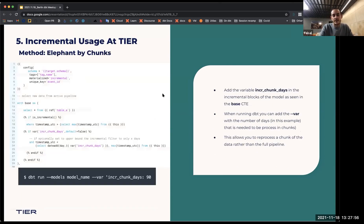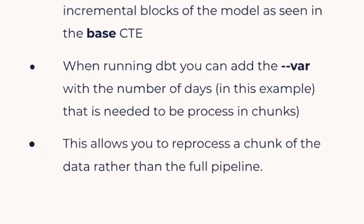The last method is what I call 'the elephant by the chunks.' Instead of reprocessing all the data, you process only a set amount of data. The incremental logic introduces a statement in the where clause — when you define the run, as you can see at the bottom, it will apply in the where statement if it's incremental. This is an extra configuration that lets you load data in chunks instead of running through all history, because maybe that's not necessary.